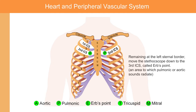Remaining at the left sternal border, move the stethoscope down to the third intercostal space, which is called ERB's point — an area to which pulmonic or aortic sounds frequently radiate.